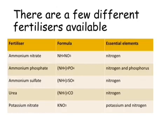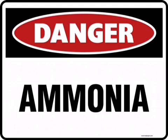There are a few different fertilisers that are widely used. The one we're going to be focusing on today is ammonium nitrate. However we can also use ammonium phosphate, ammonium sulfate, urea and potassium nitrate. We will be focusing on the production of ammonium sulfate, which is done using ammonia. If you are unsure about ammonia, please look back at the Haber process tutorial to see how this is produced.